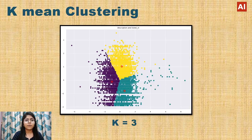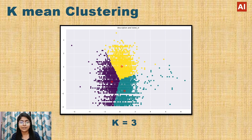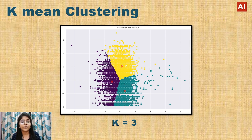Moving to K-means clustering, we can see there are 3 clusters in total, visualized in different colors, with the center of each cluster shown as a red dot. Here again, the optimal number of clusters is equal to 3.